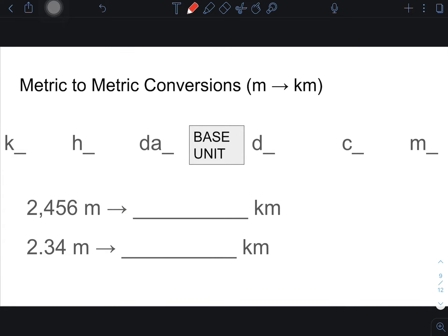So then what if we went meters to kilometers? Now we're starting here in meters, and now we're simply going one, two, three steps to the left. So my decimal point is implied to be right there, and we go one, two, three. So it's 2.456 kilometers. If you had 2.34 meters, again, three steps to the left. So in this case, you'd be 0.00234 because it was here, it was one, two, three to the left.